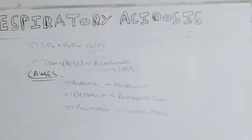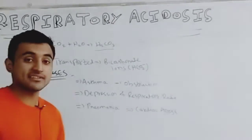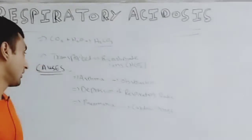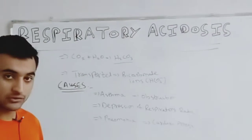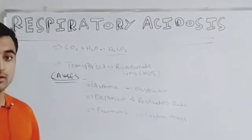In the case of asthma, we know that there is bronchoconstriction, that's why exhalation is difficult. That's why the concentration of carbon dioxide goes very high.